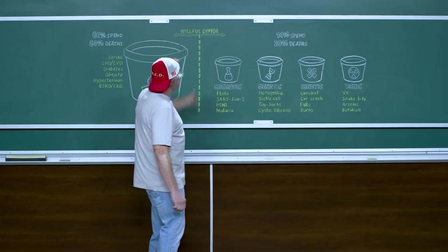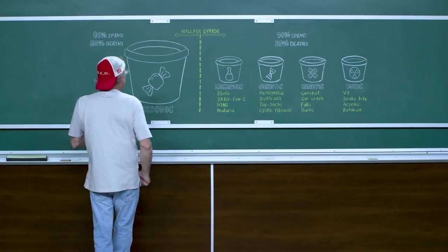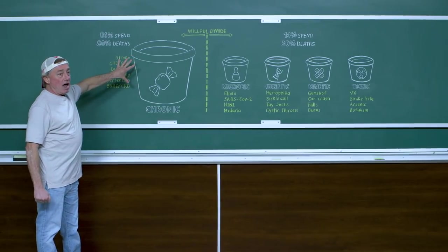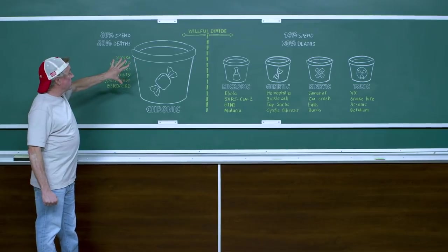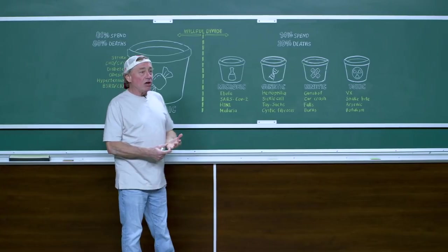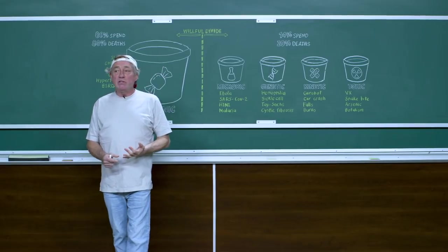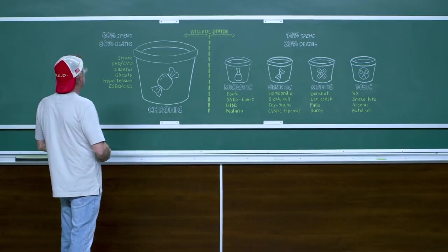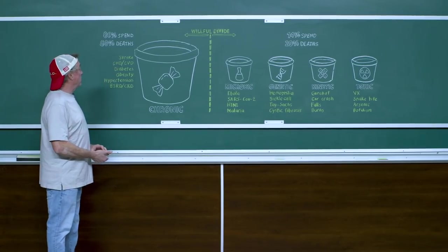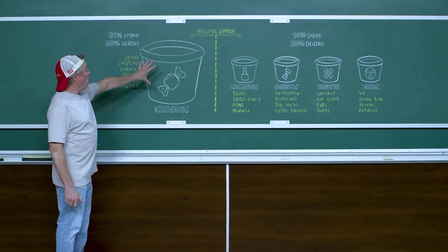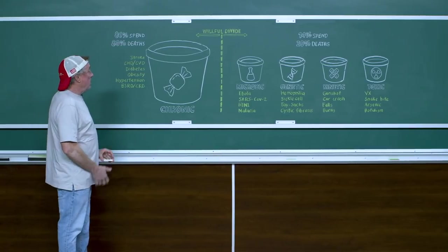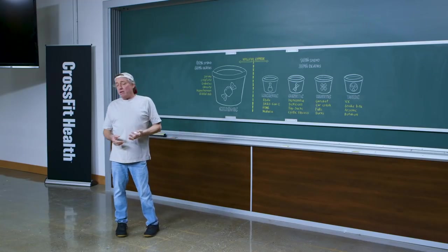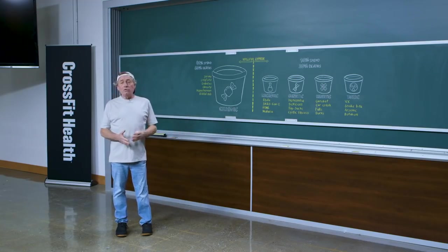And I call this the willful divide because the significant thing here for us as CrossFitters is that we have solution to this side. And the solution here is what? It's get off the couch, off the carbs, because our claim is that sedentarism and excessive consumption of refined carbohydrate, carbohydrate toxicity, some have half jokingly said, are the overwhelming cause of what's going on in this bucket.